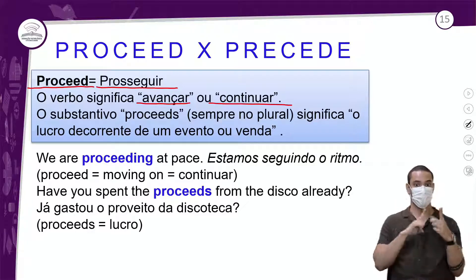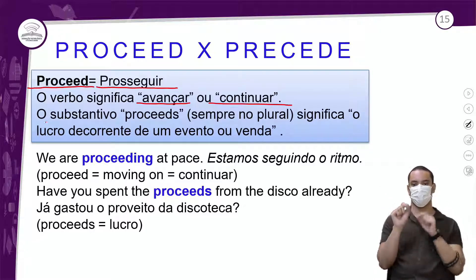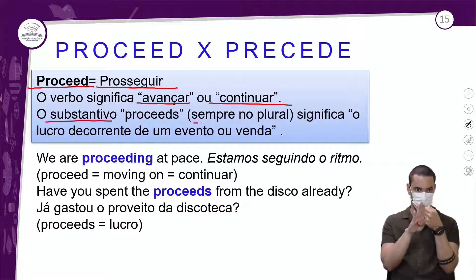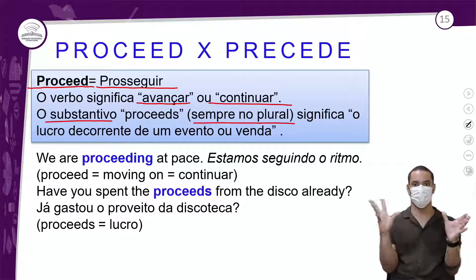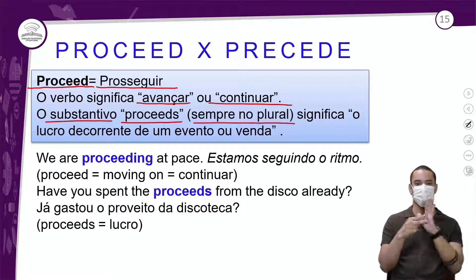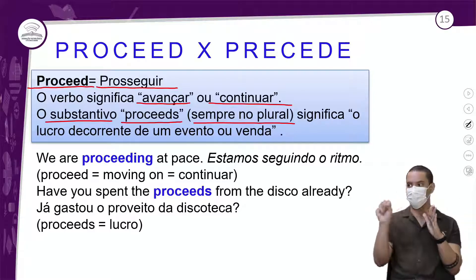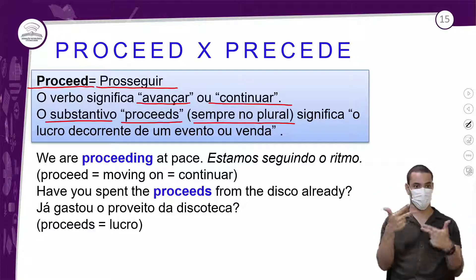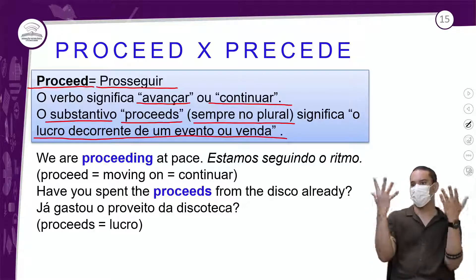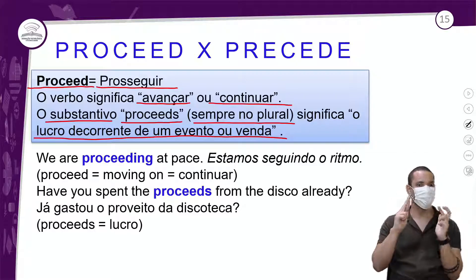Só que tem um detalhe: a palavra proceeds também trabalha como substantivo — ela tem duas classificações gramaticais. Como substantivo, ela sempre estará no plural, então você acrescenta um S no final. Esse S não indica plural no sentido comum — ele está aqui porque quando ela trabalha como substantivo, vem esse S. E aí significa uma outra coisa: o lucro decorrente de um evento ou venda. Totalmente diferente do verbo 'prosseguir'.